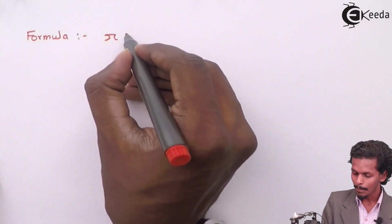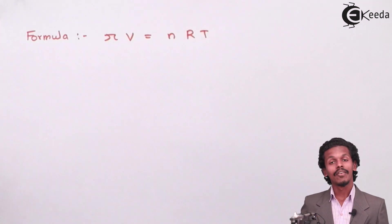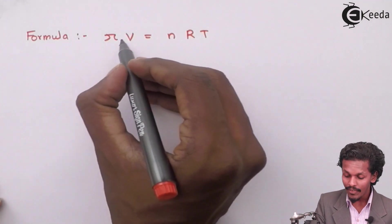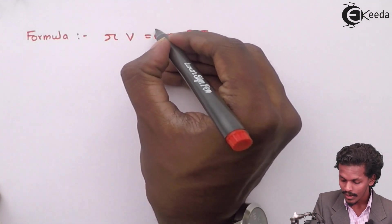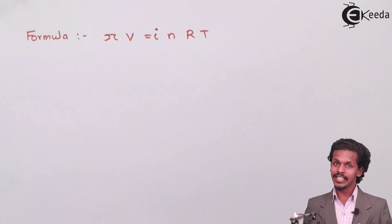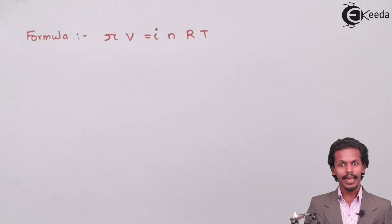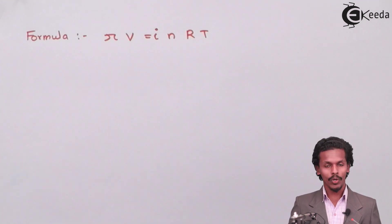So therefore the usual osmotic pressure's formula that is πV is equal to nRT will now be converted into πV is equals to i·n·R·T. In this case the i is the Van't Hoff factor. So what are the given data, let us write it down first and we will calculate the requirement.